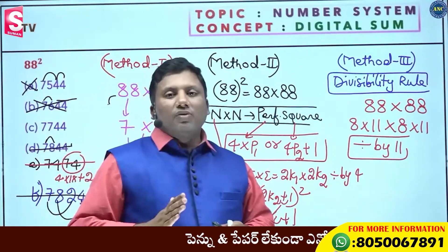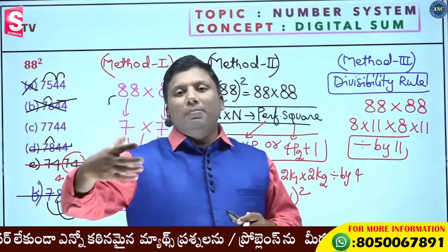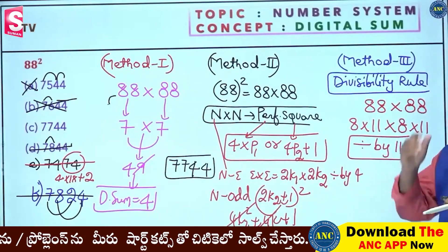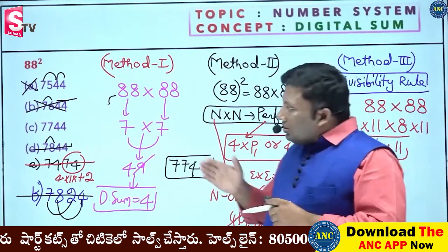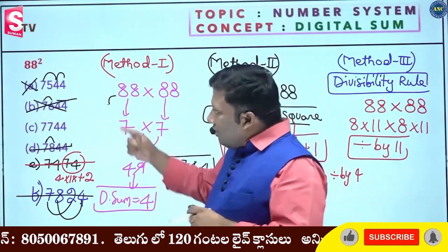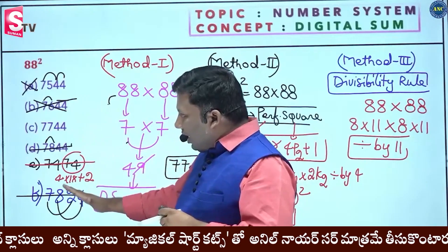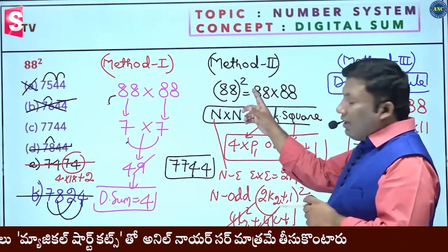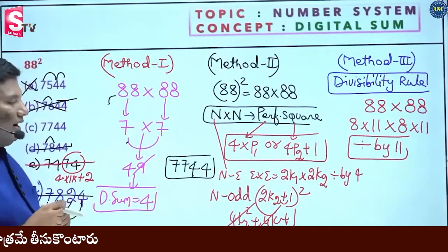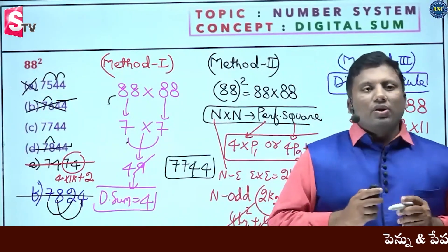So first, use digital sum to eliminate some options. Then use divisibility rules further. Or use any other concept depending on the question. If you have any doubts, please ask. All three methods - I hope it is clear. For example, 90 by 90 into 9 by 90: digital sum gives 4. First option gives digital sum 4. Second option does not give 4. Option C, D, E do not give 4 either. Also for perfect square: remainder 2 is obtained for some options, which is not valid. 88 is 8 into 11, so the answer should be divisible by 11.